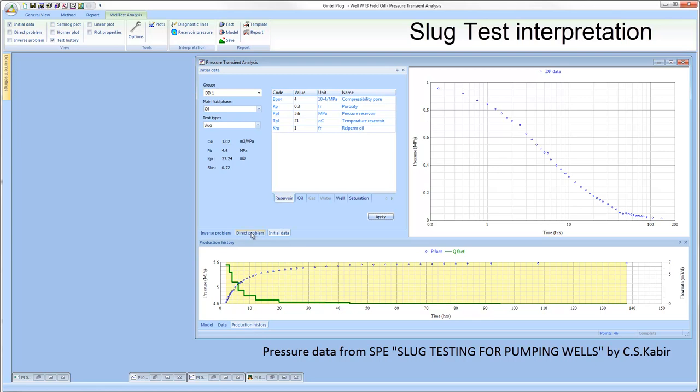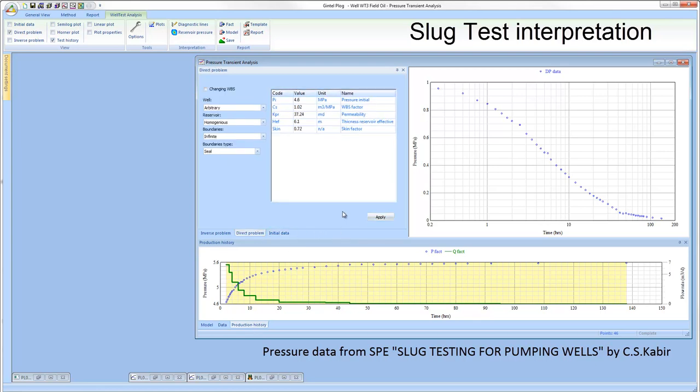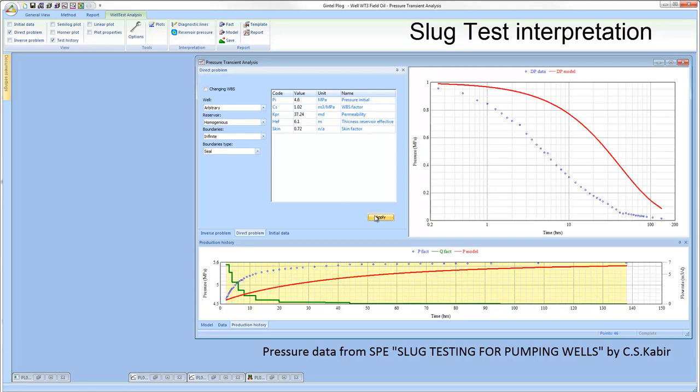Now we move to the next page and we will solve a direct problem with parameters in the grid from the previous type curves matching. We see not a good match of model over the test pressure data. To find the best match, we will move to the next page and we will use a non-linear regression to solve the inverse problem.